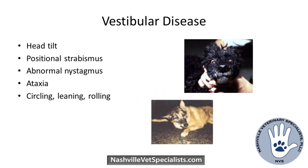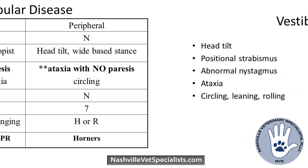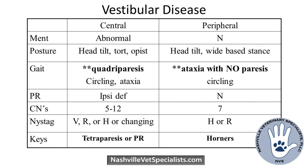Vestibular disease can be confusing. The hallmarks include a head tilt, usually with a corresponding strabismus on the side of the tilt, pathologic nystagmus, ataxia, and possibly leaning or rolling. These signs tell you we have vestibular disease — they do not tell you the etiology or diagnosis. From there, the next thing to figure out is: is this lesion central or peripheral? Central means a problem in the brainstem, usually the caudal brainstem where the vestibular nuclei are.